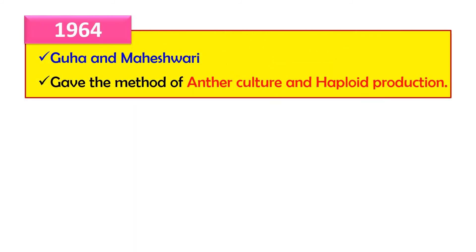In 1964, Guha and Maheshwari gave the method of anther culture and also the method for haploid production. Haploid plants are those which contain a single set of chromosomes and are very useful in different kinds of research. Guha and Maheshwari first produced haploid plants by using anther culture.